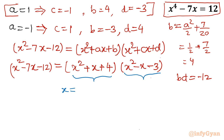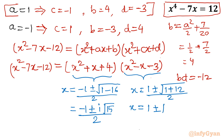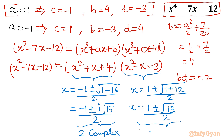From x² + x + 4 = 0: x = (-1 ± √(1 - 16))/2 = (-1 ± i√15)/2 — two complex solutions. From x² - x - 3 = 0: x = (1 ± √(1 + 12))/2 = (1 ± √13)/2 — two real solutions. So we have 2 complex and 2 real roots.